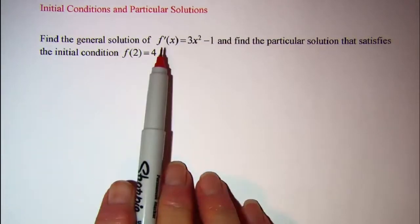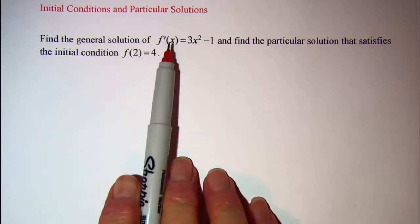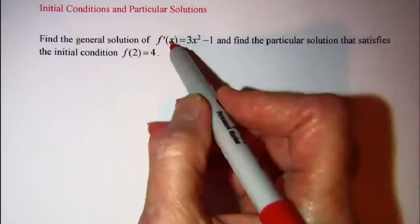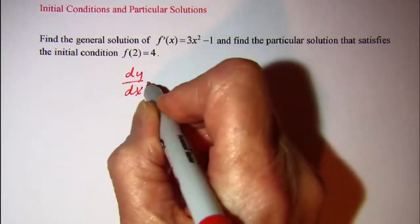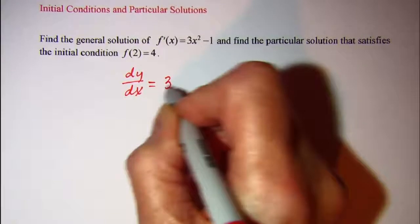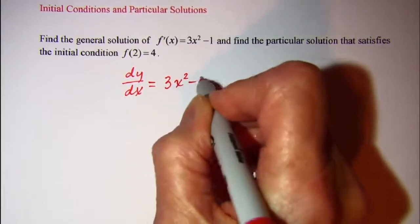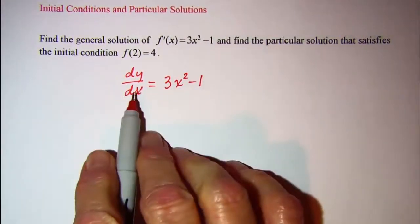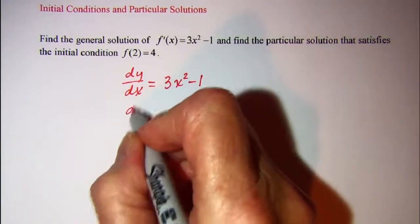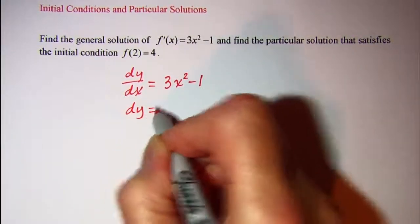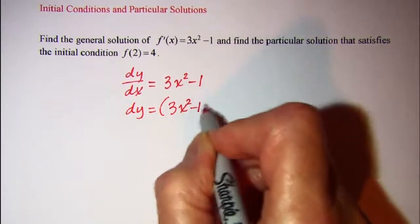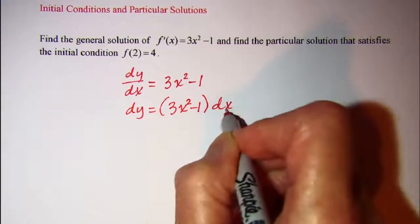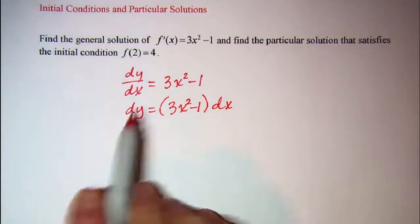For our general solution we'll first integrate this equation. We know that f'(x) is the same as dy/dx and that is 3x² - 1, and then we'll write this as a differential so we have dy = (3x² - 1)dx. Then we integrate both sides.